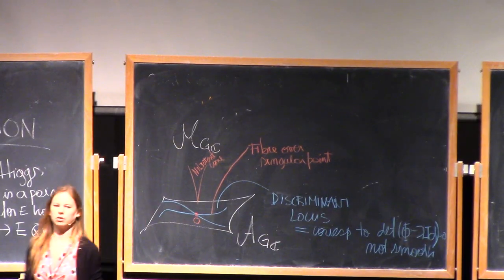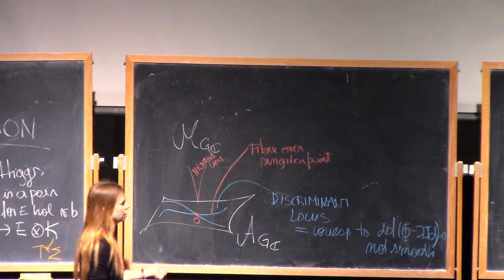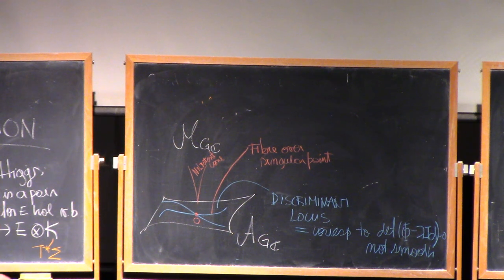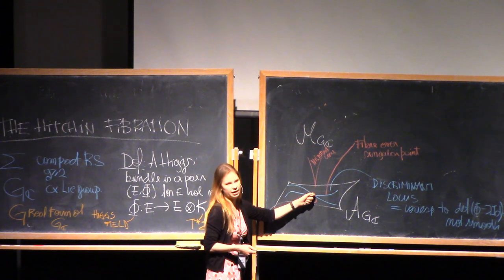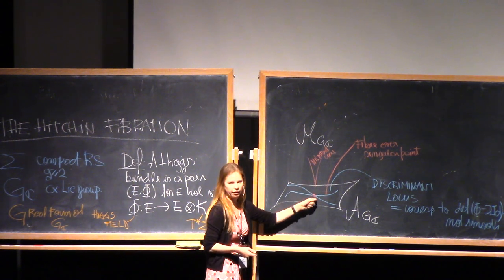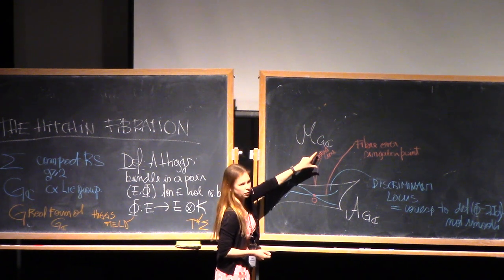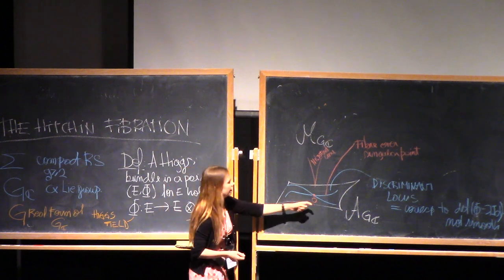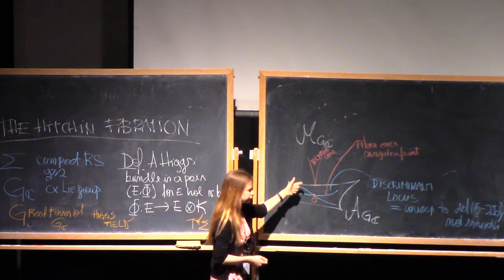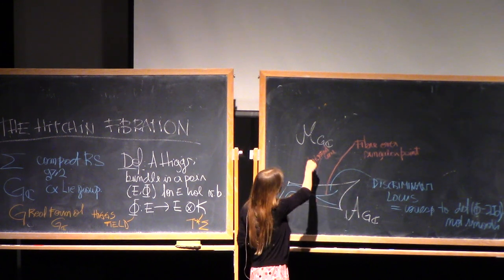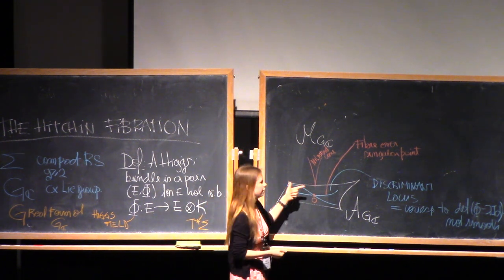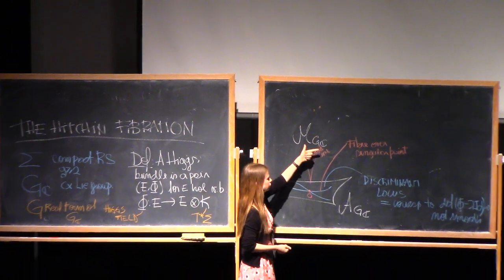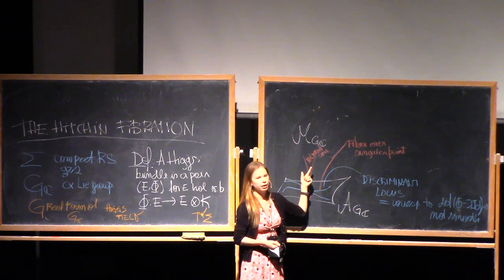The nilpotent cone encodes information from many different types of Higgs bundles. When the group is compact, the Higgs field is zero, so the Higgs bundle is just the vector bundle — that case is inside the nilpotent cone. But there will be other Higgs fields which are nilpotent, having zero in the characteristic polynomials, also going over zero. Understanding what the nilpotent cone is — for GC there is quite a bit understood, for SL(2) it's understood — but in general for other groups, understanding the nilpotent cone is a very big open question.